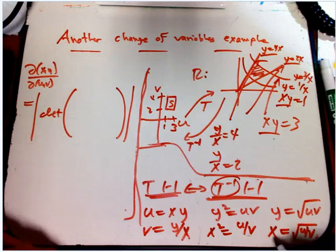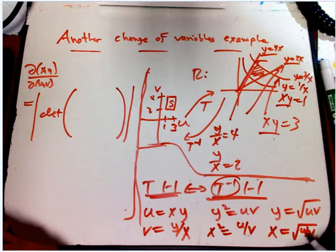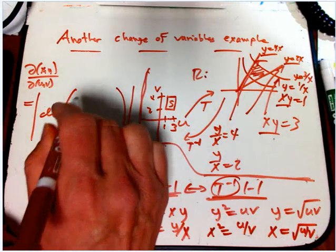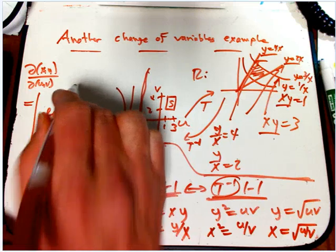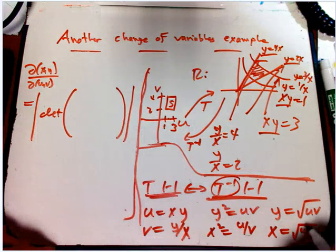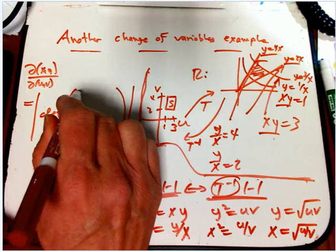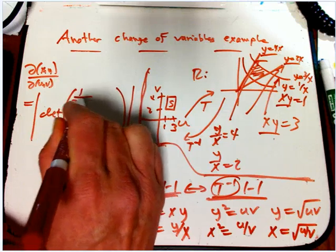So dx/du is going to be derivative of that. So that's square root u over square root v. So it's going to be 1 over 2 root uv.